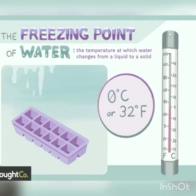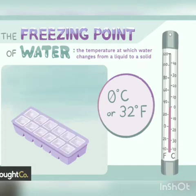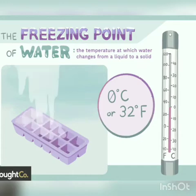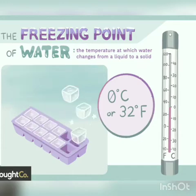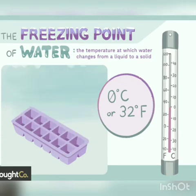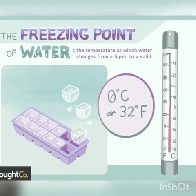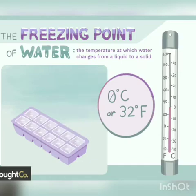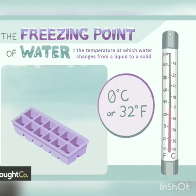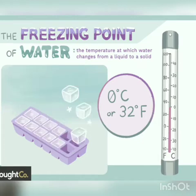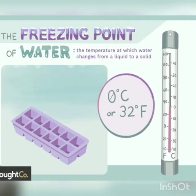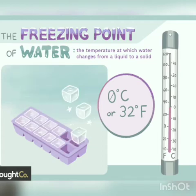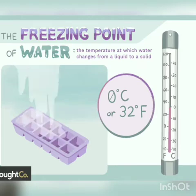Freezing point and melting point of any substance will always be the same. Freezing point is the temperature at which any substance starts freezing — not completely frozen, but starts freezing. For example, ice starts melting at 0 degrees Celsius, so it will also start freezing at 0 degrees Celsius. Remember: freezing point and melting point of any matter will always be the same.